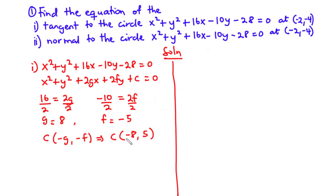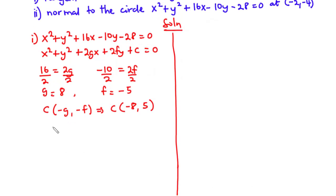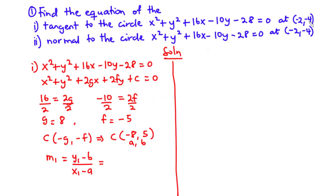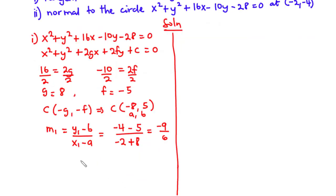Next, we find the gradient of the radius. The gradient M1 equals (y1 minus b) divided by (x1 minus a), where (a, b) is the center and (x1, y1) is the point on the circumference. So M1 = (−4 − 5) / (−2 − (−8)) = (−4 − 5) / (−2 + 8) = −9 / 6. Therefore, the gradient of the radius is −3/2.